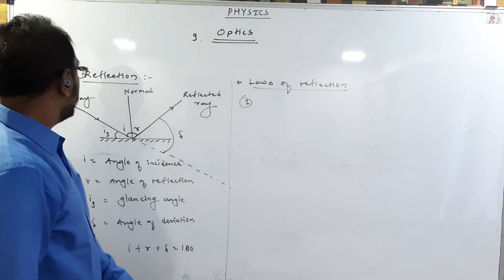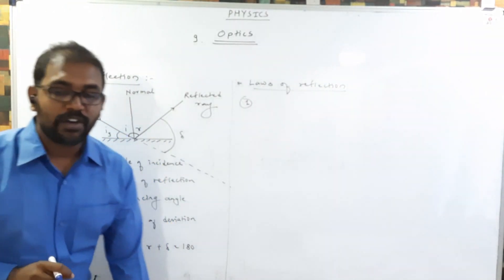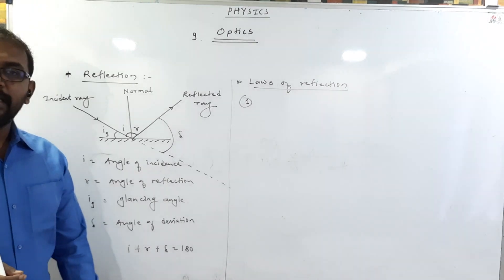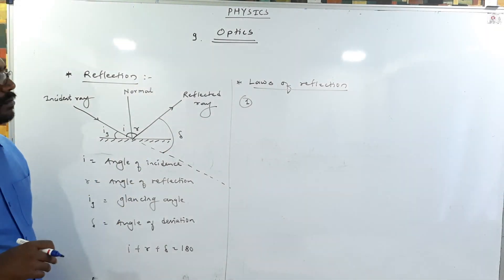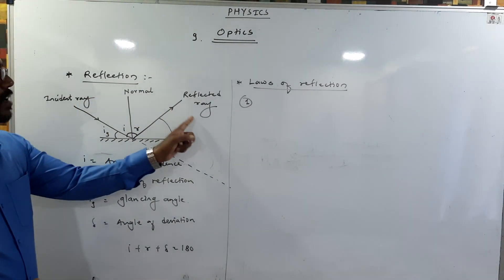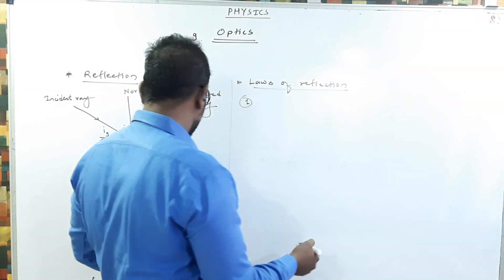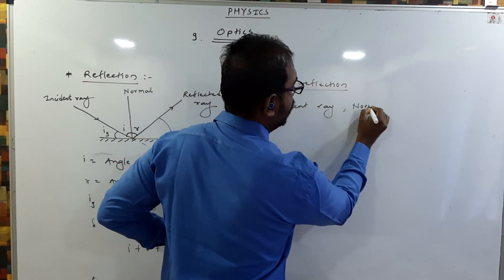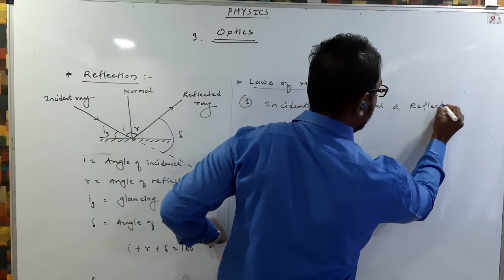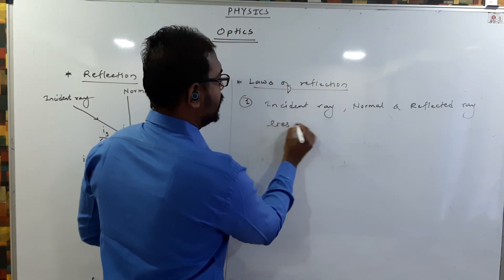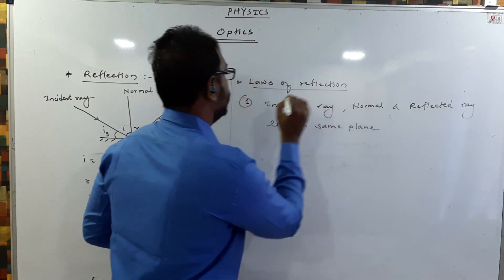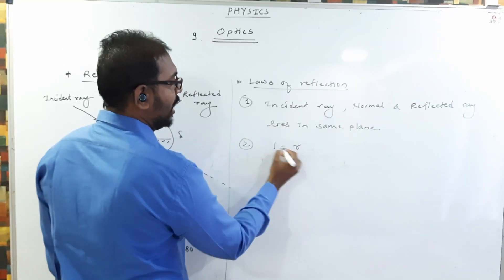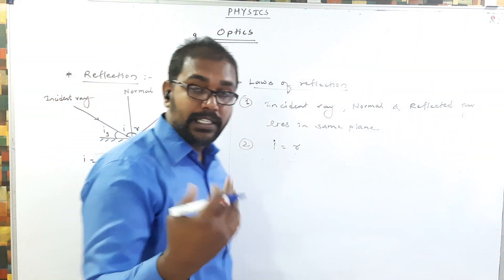Laws of reflection: the first law is about the incident ray, normal, and reflected ray. The first law states: incident ray, normal, and reflected ray lie in the same plane. We can also write it as: the incident ray and reflected ray lie on opposite sides of the normal. The second law of reflection is the relationship between i and r — angle of incidence is equal to angle of reflection.